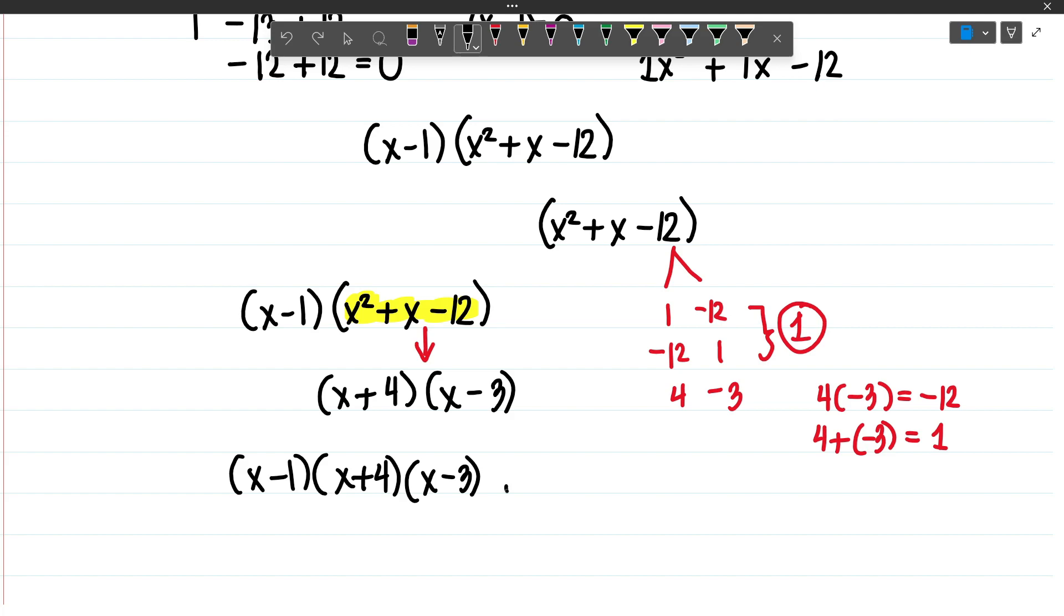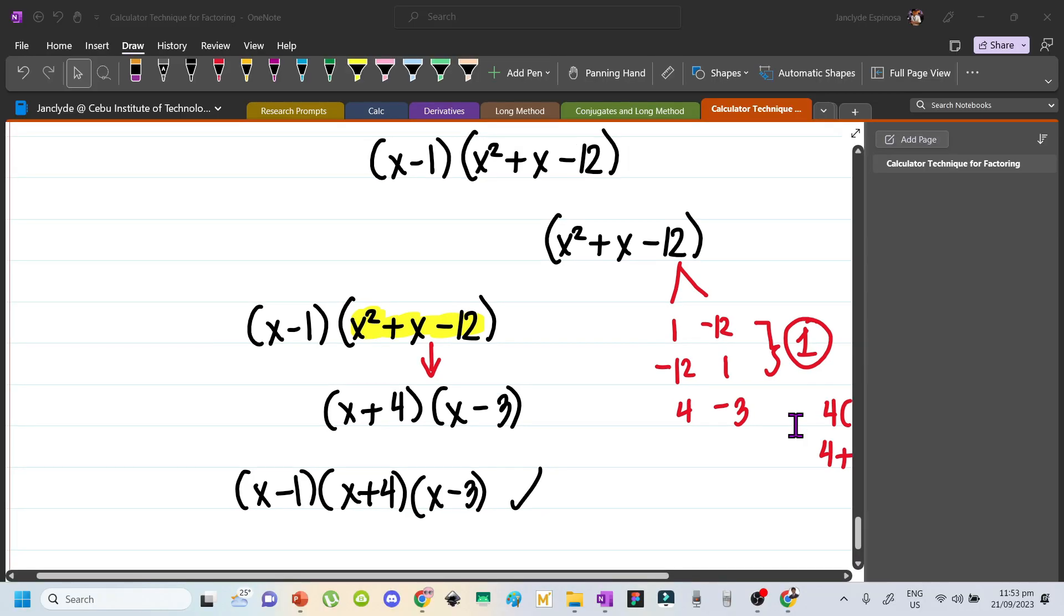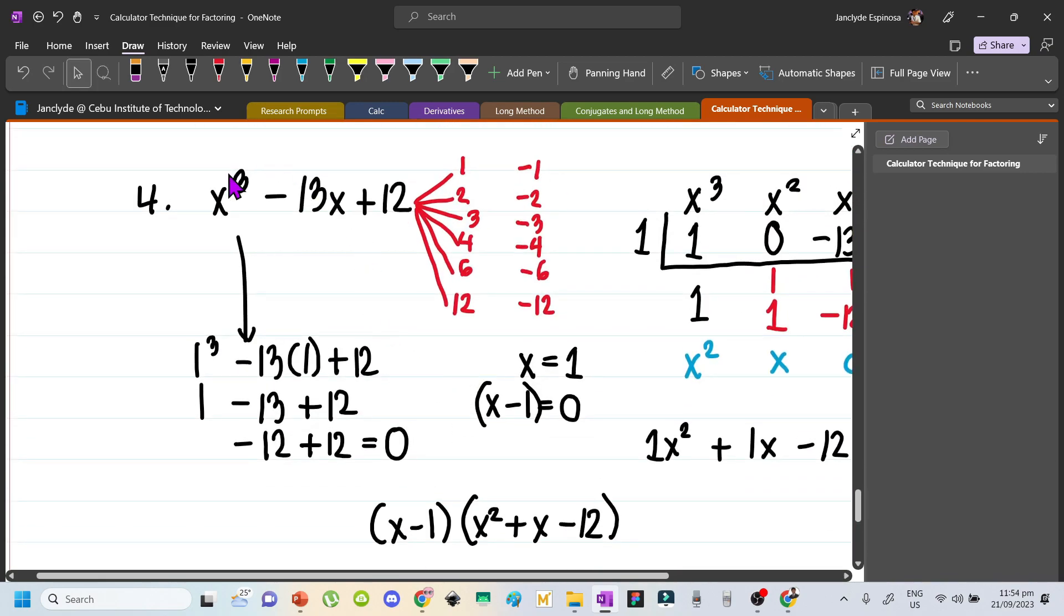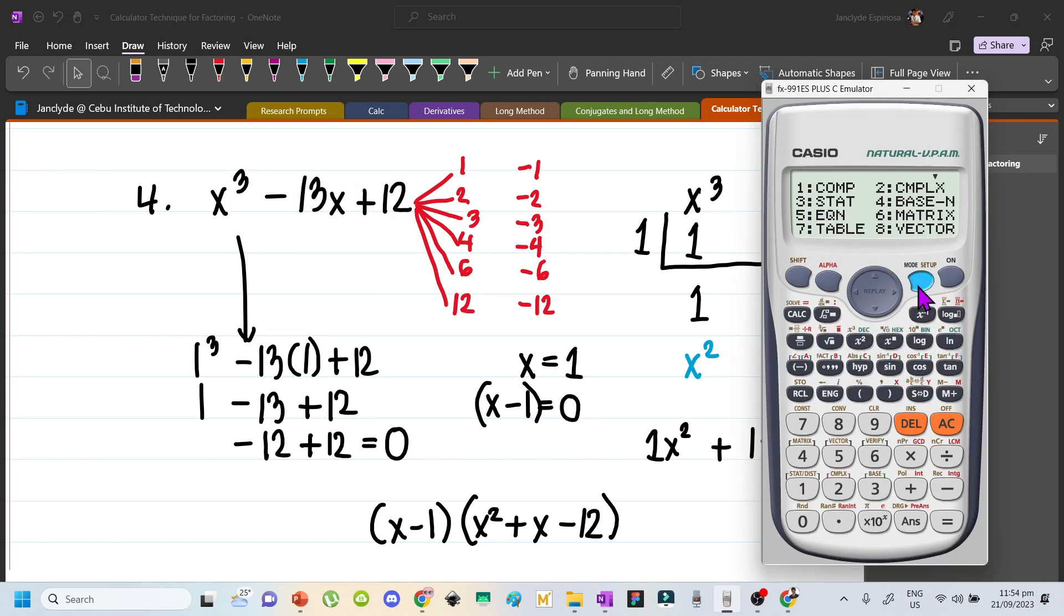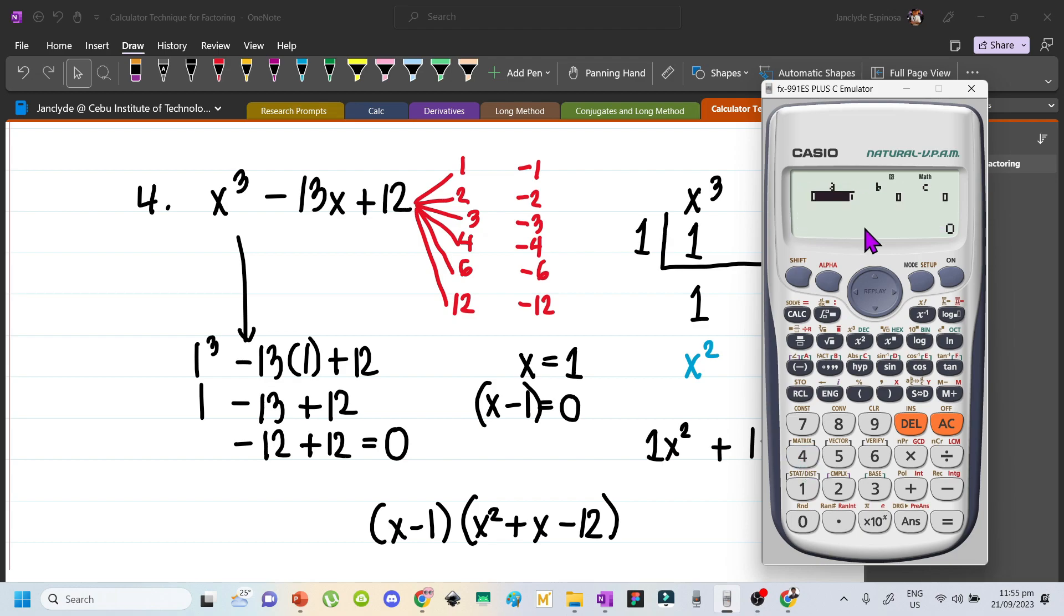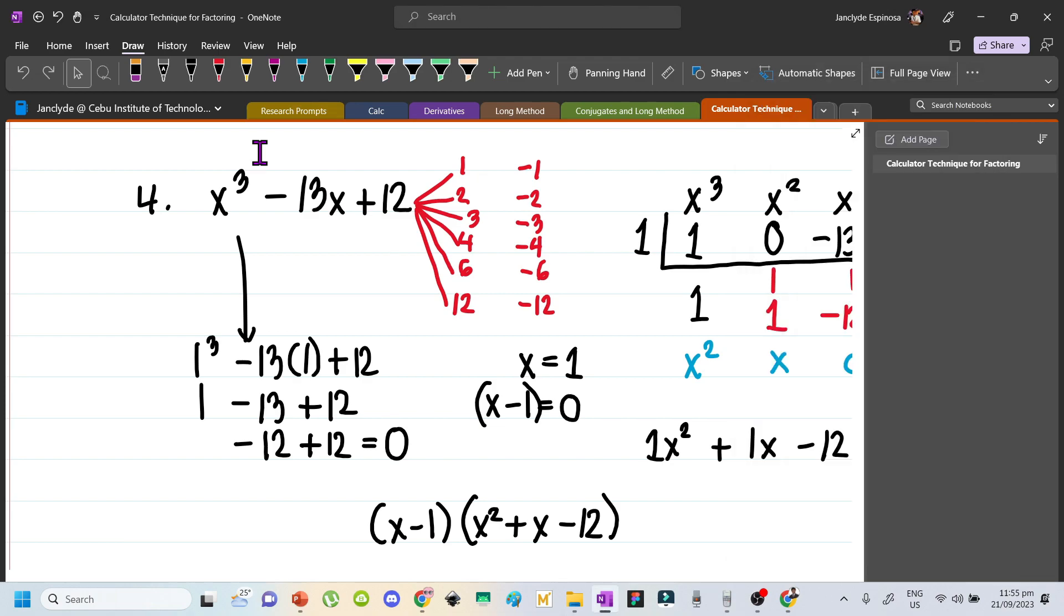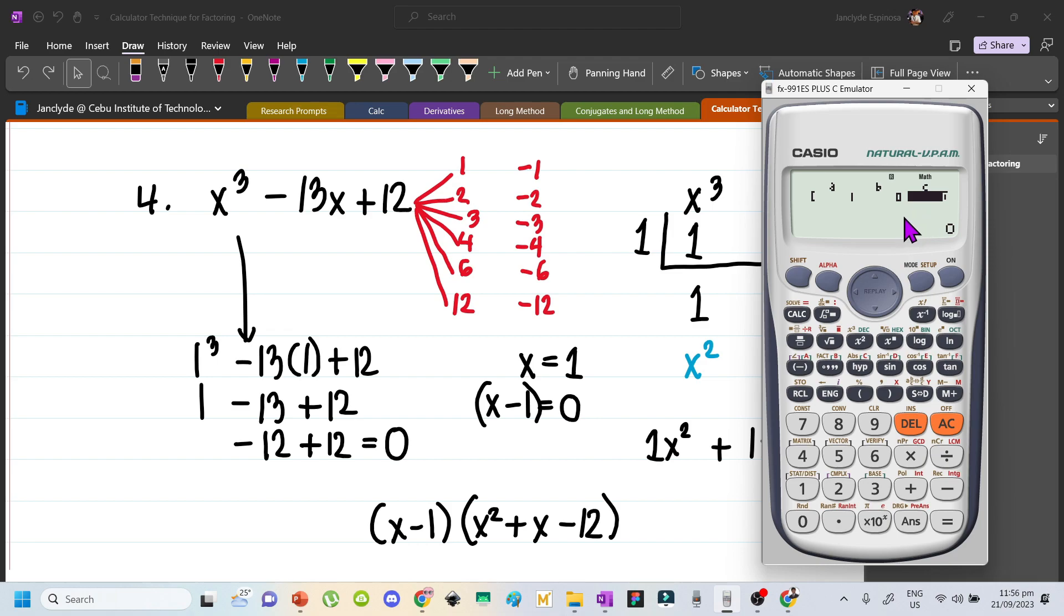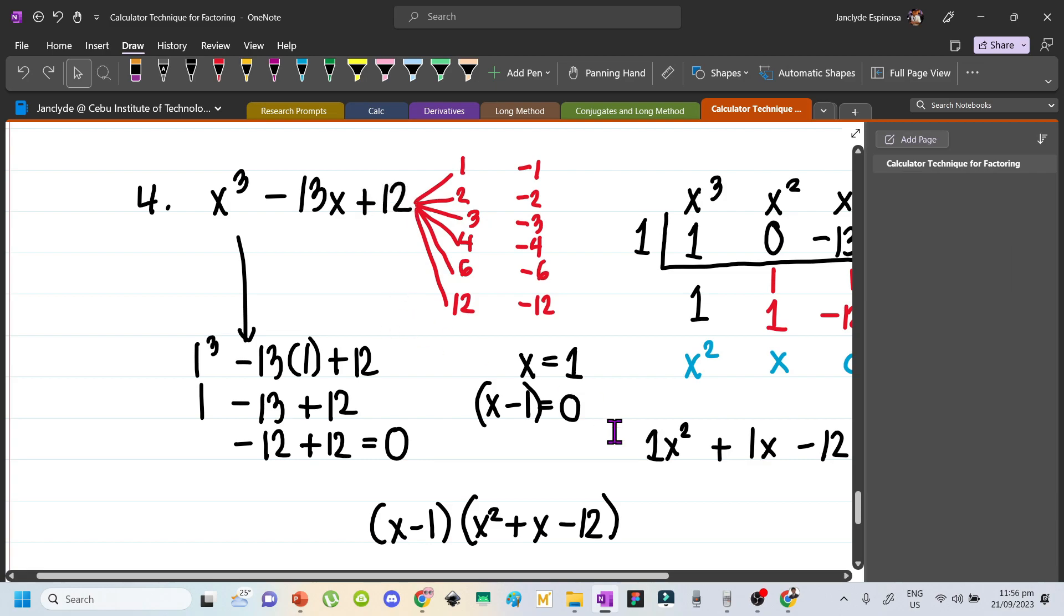So these will be your factors. Again, using our calculator, we can easily obtain these factors by just merely inputting the coefficients of this function. Let's press mode and then 5 and then pick 4 because we are dealing with a cubic equation. The highest degree is 3. Let's press 4 and then our A is 1. Our B is non-existent because we don't have a coefficient of x squared. Our C is the coefficient of x, which is negative 13. And our D is your constant value, 12.